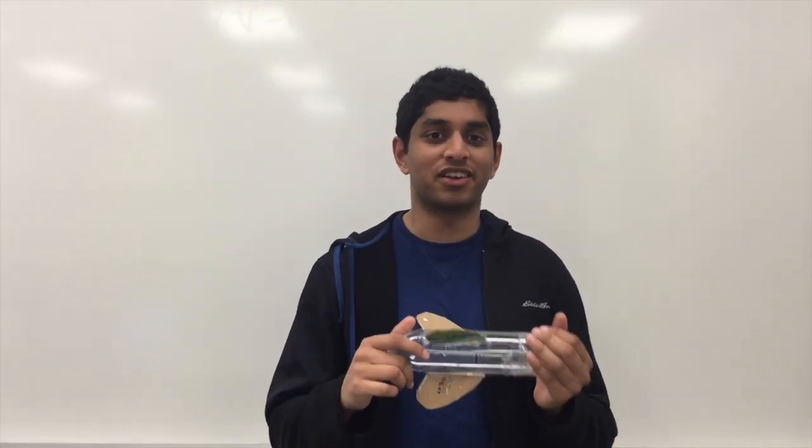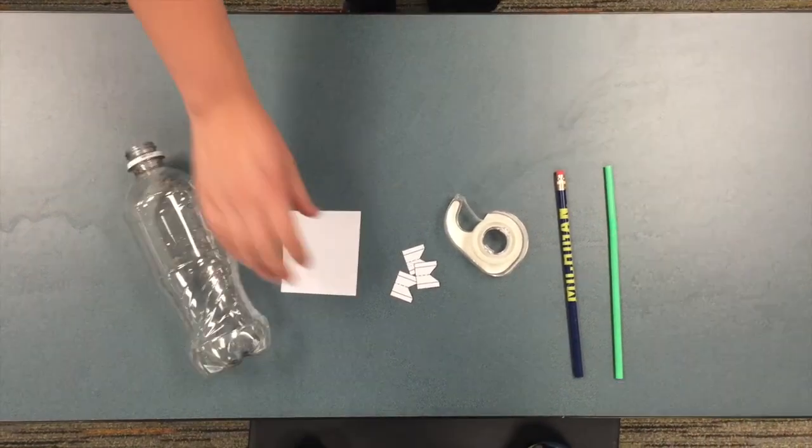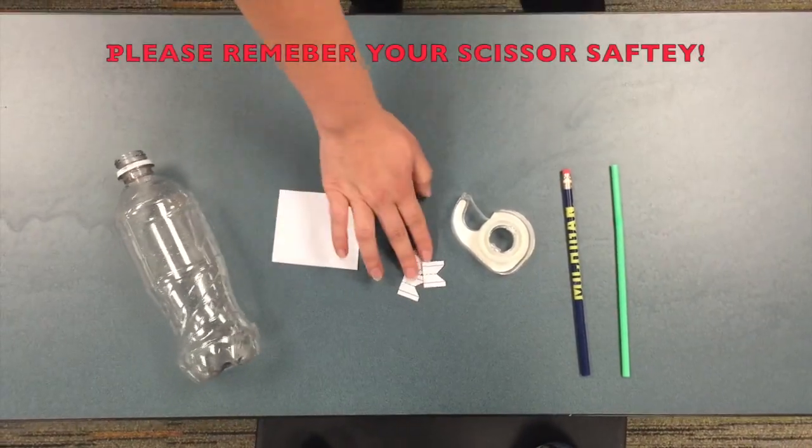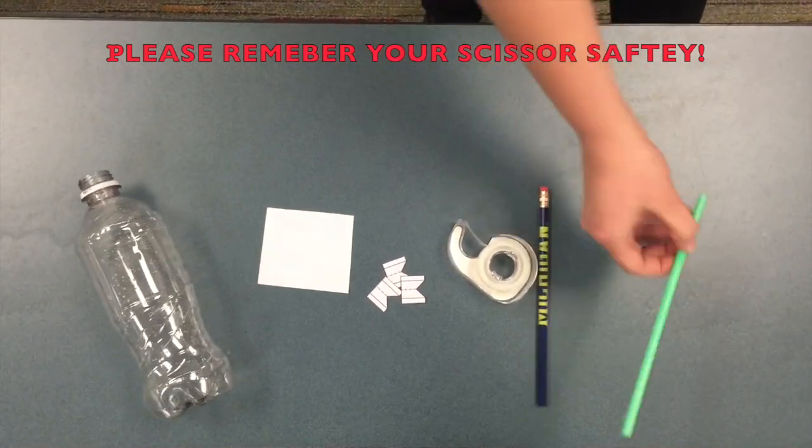Now we're going to show you how to make your own rocket. So what you'll need is an empty water bottle, a little bit of paper, three fins from the template in the comments below, some sketch tape, a pencil, and a straw.